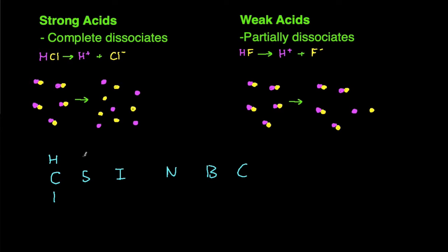First one's HCl, second H2SO4, next one HI, then HNO3, HBr, and then HClO4, and lastly HClO3. Those are the seven strong acids that you need to know in general chemistry.